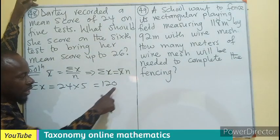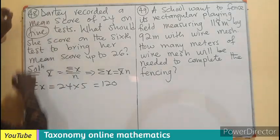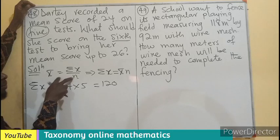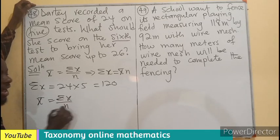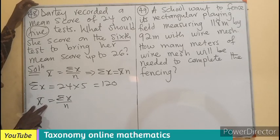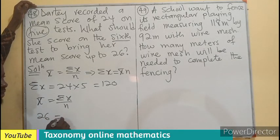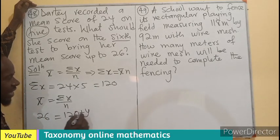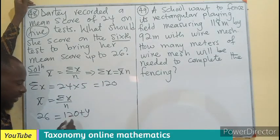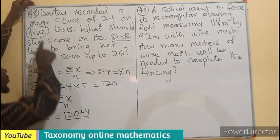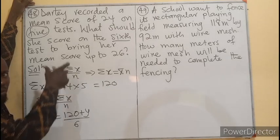Now if the sixth test is coming, it will also increase this number. Then it's also going to increase the number of texts from five to six. So from the same formula, your mean is going to be the sum of the numbers over N. In this case, the mean is going to be 26. The sum of the tests is going to be 120 plus whatever the sixth score will be. Then the number of tests will now move from five to six. So here becomes six, following the same formula.